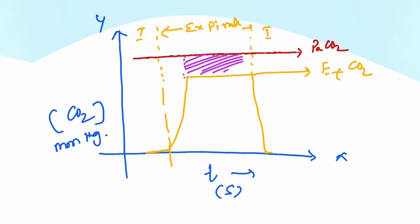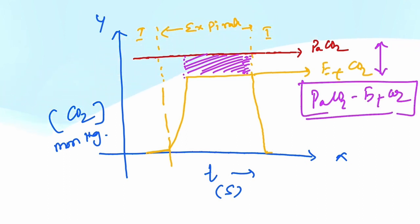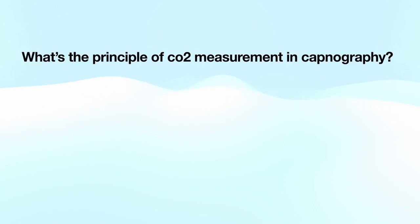And this region is alveolar dead space. So the alveolar dead space contributes to the gradient. This PaCO2 minus ETCO2 gradient is contributed by this alveolar dead space. Hope you are clear about the concept.